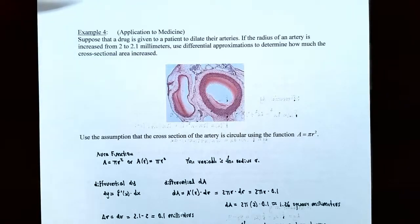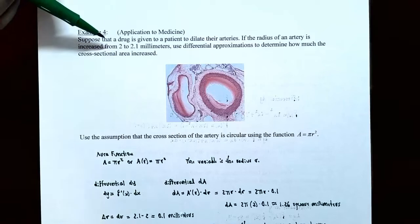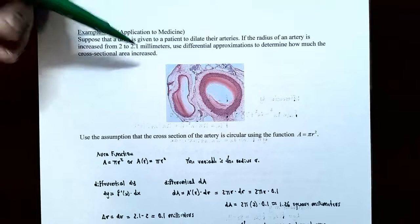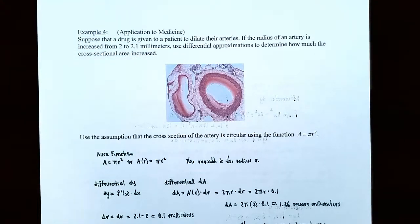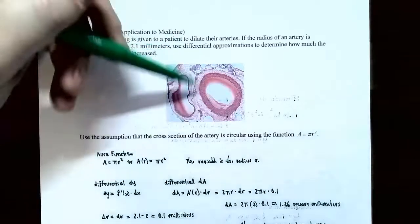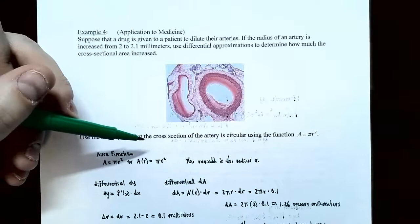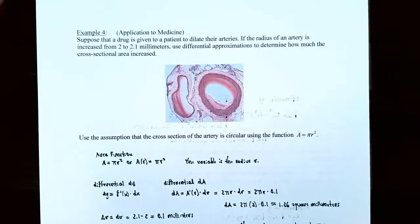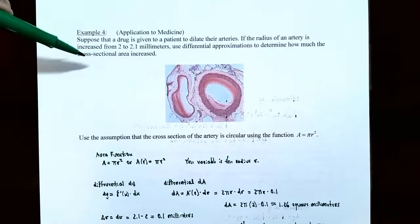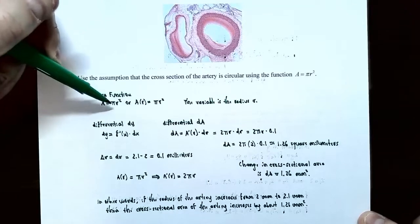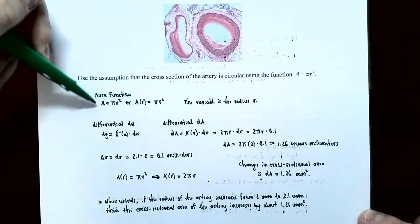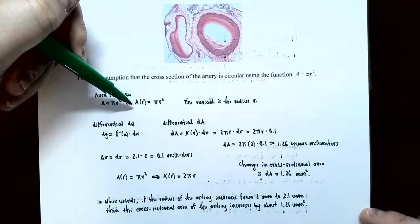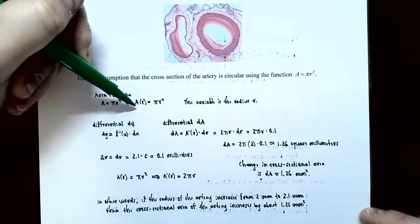Example 4 — Application of Medicine: Suppose a drug is given to a patient to dilate their arteries. The radius increases from 2 to 2.1 millimeters. Use differential approximations to determine how much the cross-sectional area increased. Since the cross-section is approximately a circle, we use the function A equals pi r squared. The variable is r (the radius) and the output is the area A.